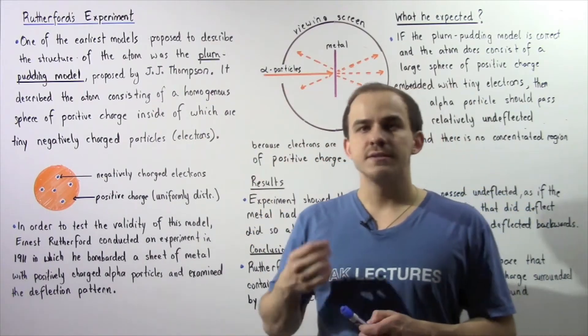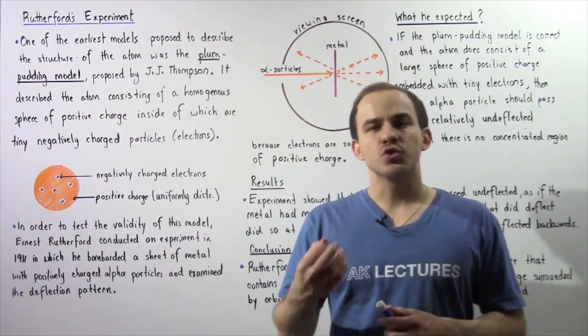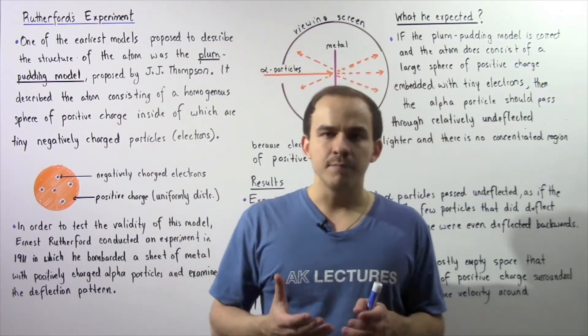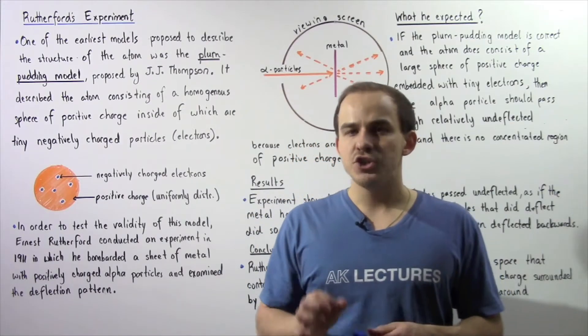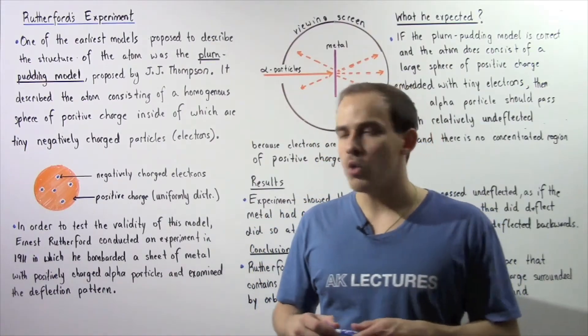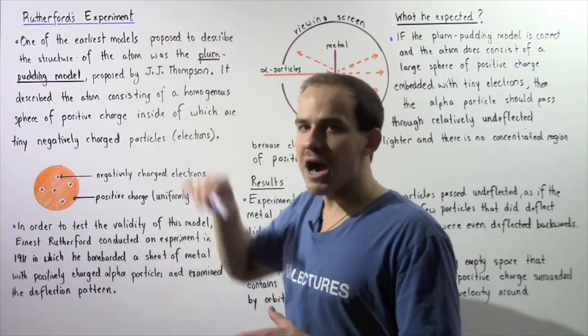One of the earliest models proposed to describe the structure of the atom was proposed by JJ Thompson himself, and this model became known as the Plum Pudding Model.